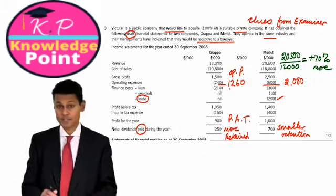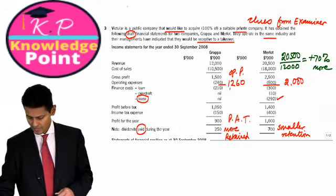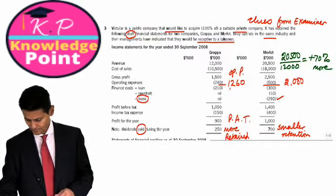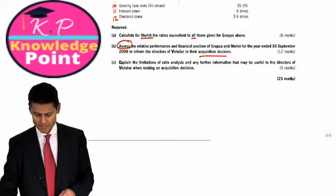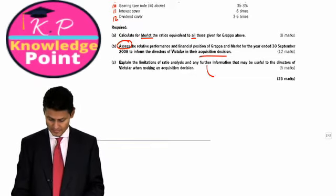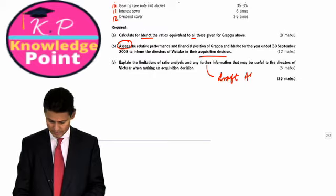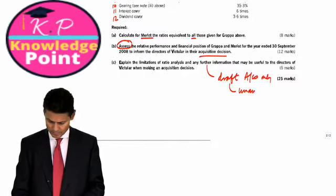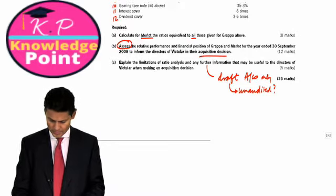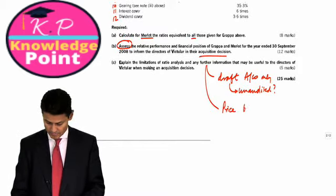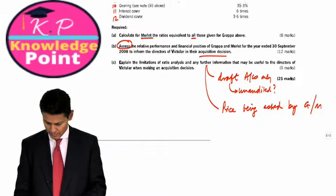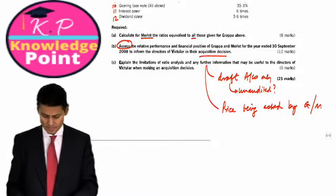The kind of additional information - in the very first page it says something about it being a draft set of accounts. So I suppose you could ask for the final set. Draft could be before the audit. That's one point, additional information. And the other is what's the price. Draft accounts only, so maybe unaudited. So how much reliability can be placed on that. And the price being asked by Grappa and Merlot owners. That's well worth mentioning. So you can see those five marks at the end of a question are very easy to come by.